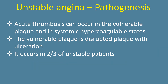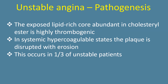Acute thrombosis can occur in the vulnerable plaque and systemic hypercoagulable states. The vulnerable plaque is a disrupted plaque with ulceration, occurring in two-thirds of unstable angina patients. The exposed lipid-rich core abundant in cholesterol ester is highly thrombogenic. In systemic hypercoagulable states, the plaque is disrupted with erosion, occurring in one-third of unstable patients.